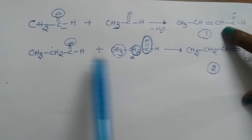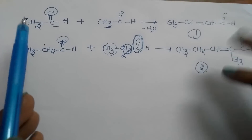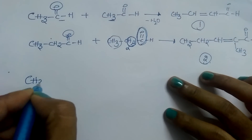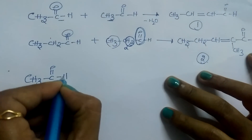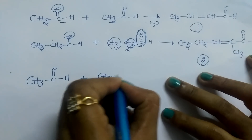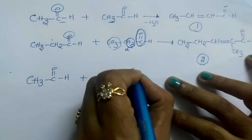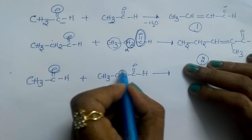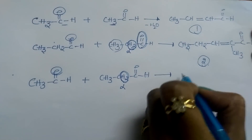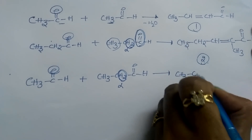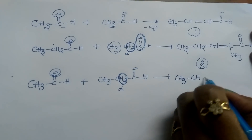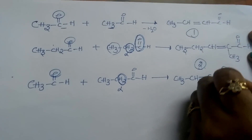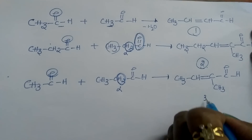When acetaldehyde (CH3-CHO) reacts with propanaldehyde (CH3-CH2-CHO): remove this oxygen from the acetaldehyde. Do not remove its hydrogens — remove the two hydrogens from the alpha carbon of propanaldehyde, because that is the acidic alpha carbon. Then write CH3, CH, double bond, C, connecting CH3 to this carbon, and make C double bond O. This is the third product.